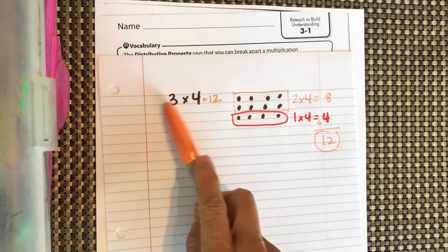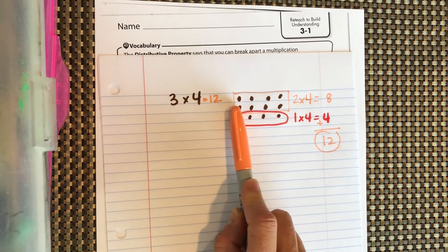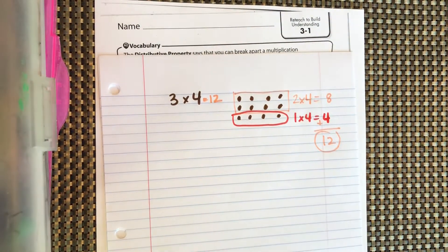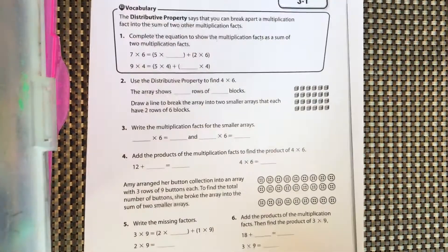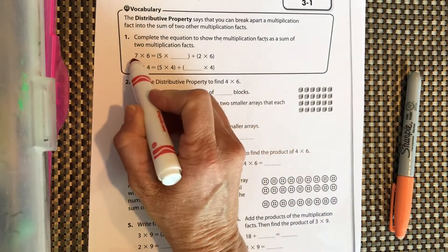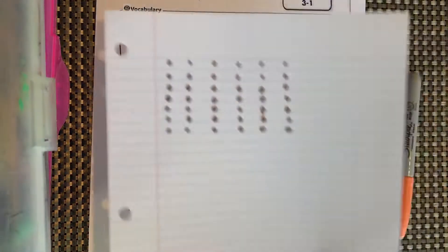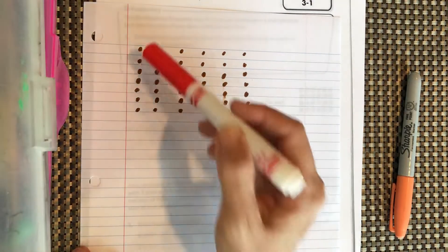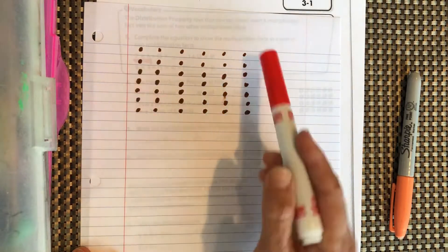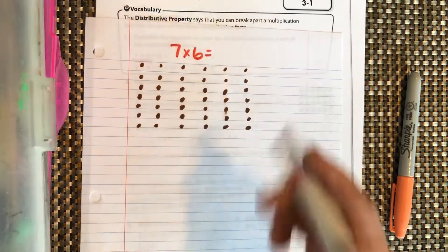So three times four equals 12. What they're saying is you can take a multiplication problem and break it up into two times four and one times four and put them together to get your answer. Let's look at the worksheet — we have 7 groups of 6. Here we have 7 rows and 6 in each group, so we have 7 times 6.